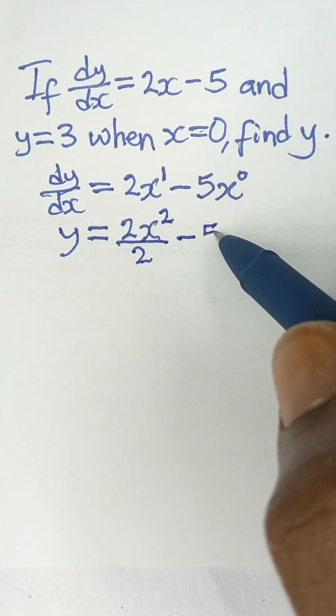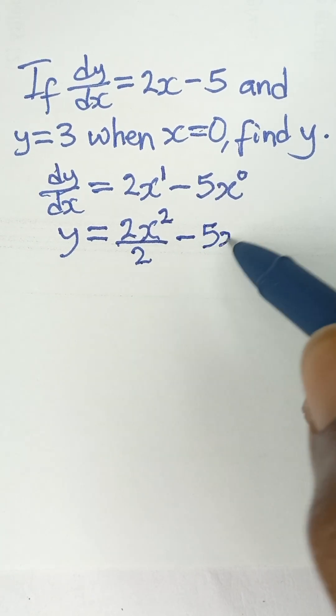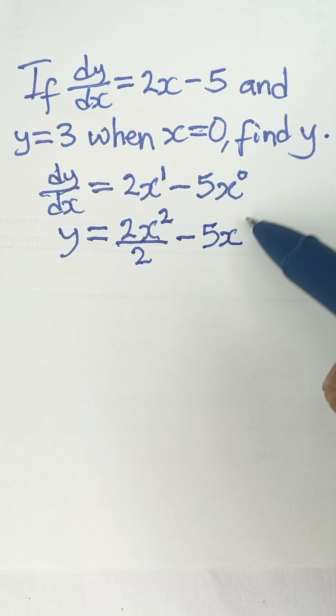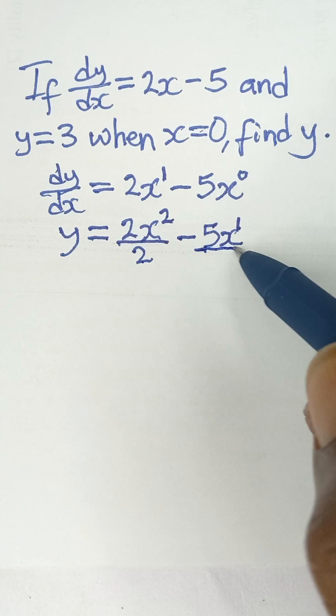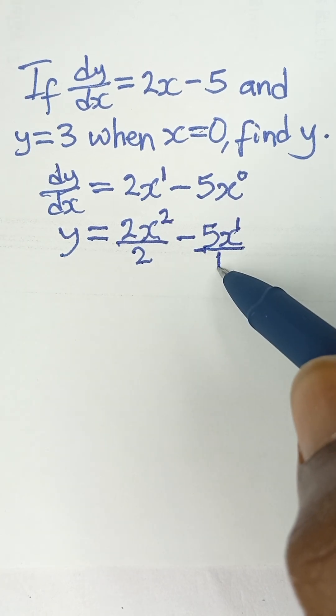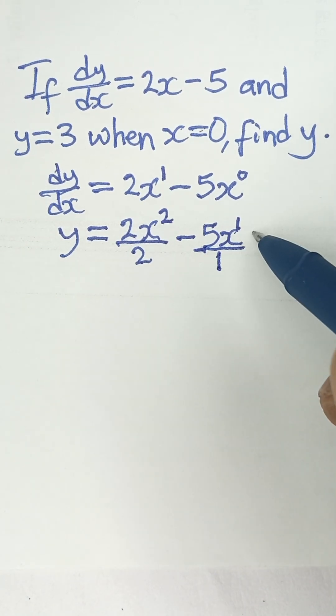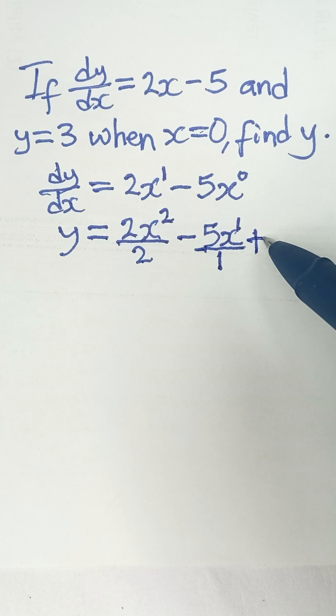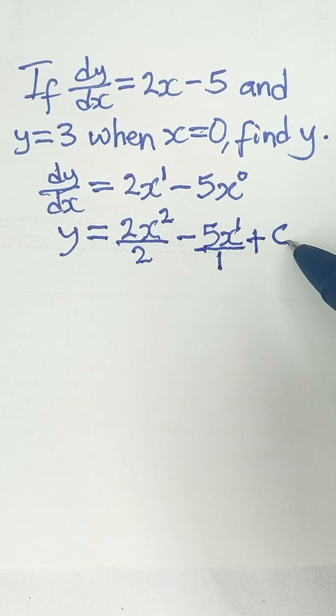The same thing we do to this 5. We say 5x raised to the power 0 plus 1. We also add 1 to the power 0. So 0 plus 1 is 1. So this 1, we take it down, use it to divide the expression obtained. And then after integrating, you have to add a constant value, c.